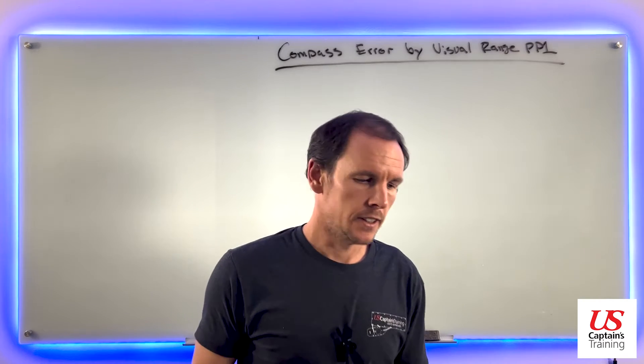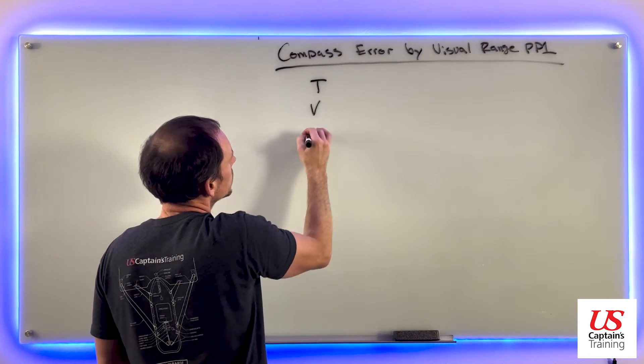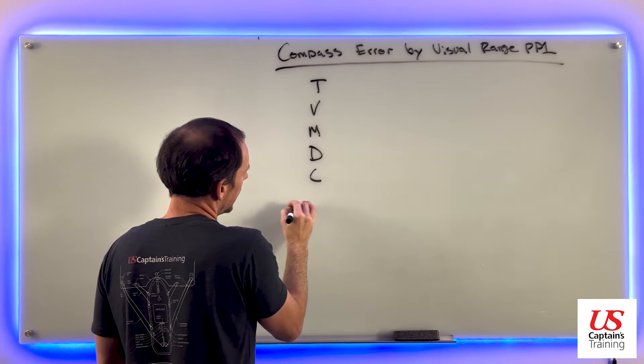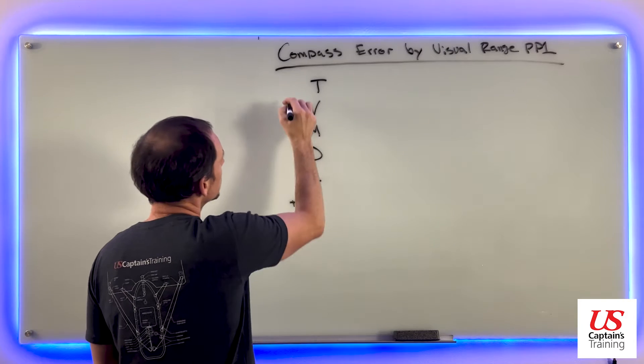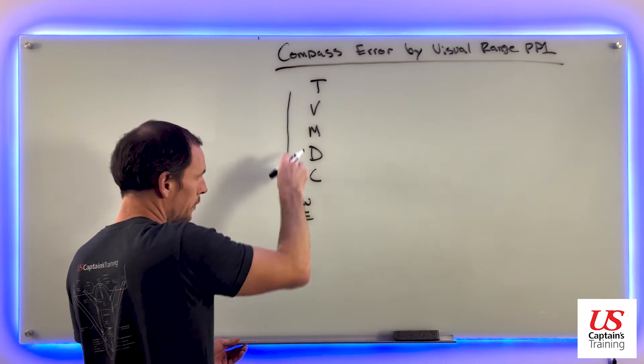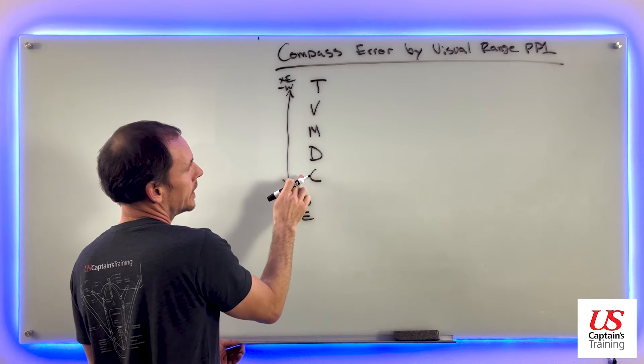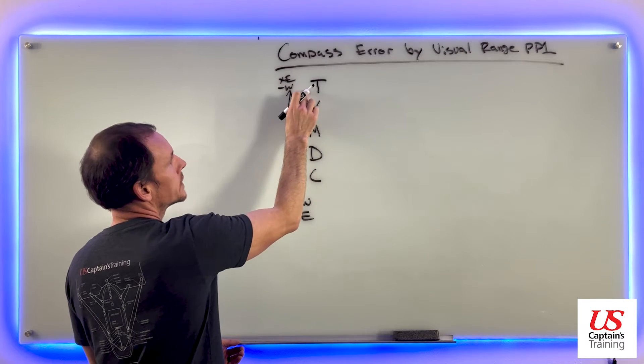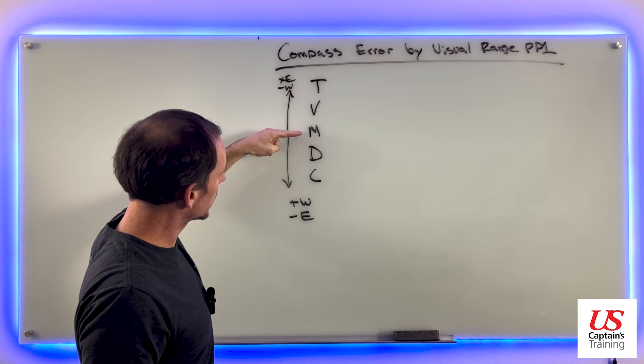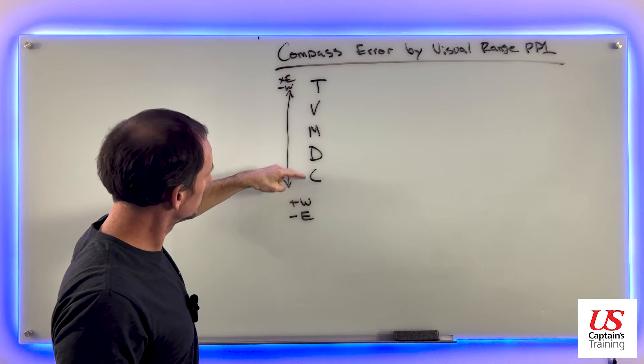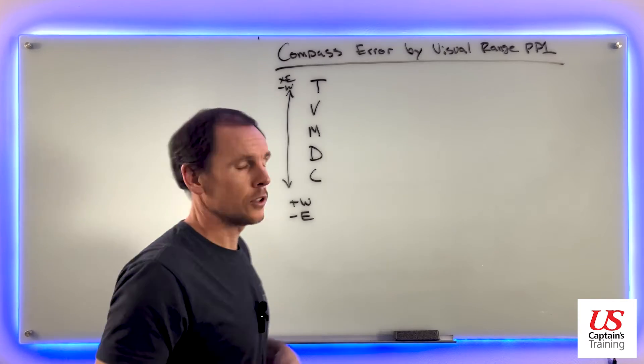Let's set up our compass correction. We say 'true virgins make dull company, add west' – add whiskey, subtract easticks. This is when we're going down from true to compass. If we were going up, we'd do the opposite: subtract west and add east, saying 'can dead men vote twice at election.' That's a good way to remember: true, variation, magnetic, deviation, compass. Variation and deviation combined make up compass error.